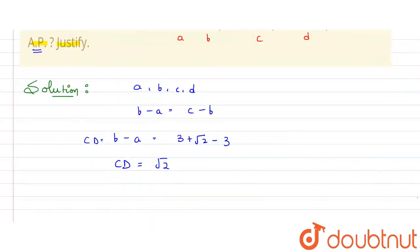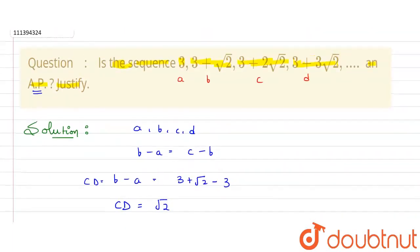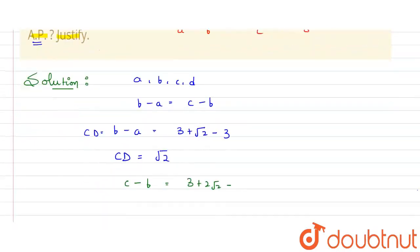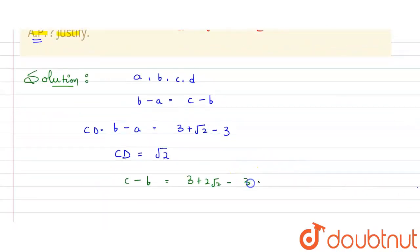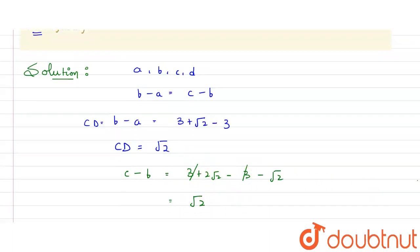Now, let's take the next two terms here. So, next terms will be C minus B. So, what is the value of C? 3 plus 2 root 2. Let's do 3 plus 2 root 2 minus the value of B. B is 3 plus root 2. So, minus 3 and minus root 2 will be here. So, on simplification, what we will get? This 3 and minus 3 will get cancelled. So, we will get only root 2. So, common difference is same.